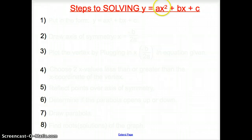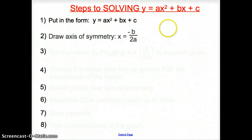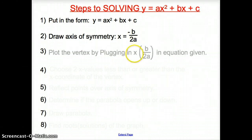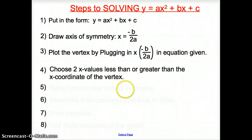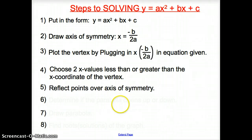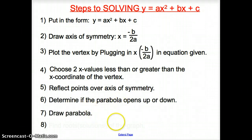So now here are some final steps to solving a quadratic equation. First, we put it in the form y equals ax squared plus bx plus c. Second, we drew the axis of symmetry where it's negative b over 2a. Step 3, we plugged the axis of symmetry into our equation, and we chose two values less than or greater than the x-coordinate. We reflected the points over the axis of symmetry. We determined if it opened up or down, so we could draw our parabola. And the extra part here is how to find the roots or solutions of the graph.